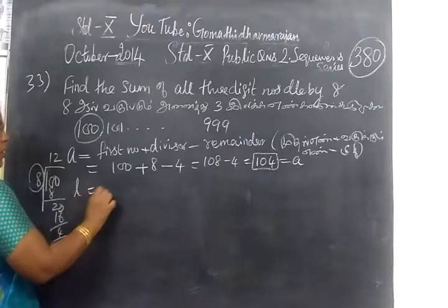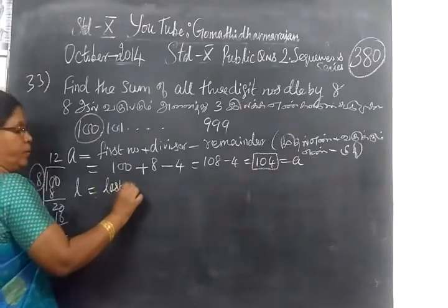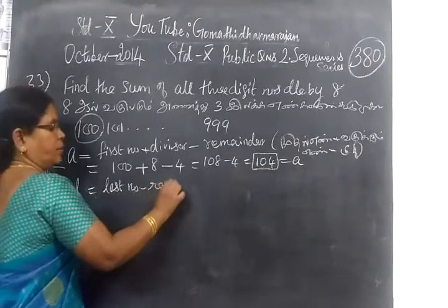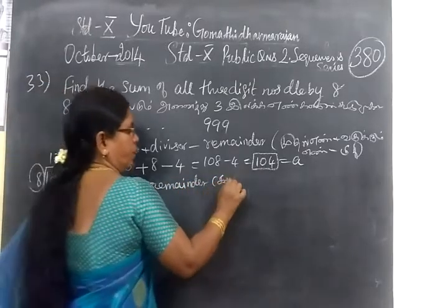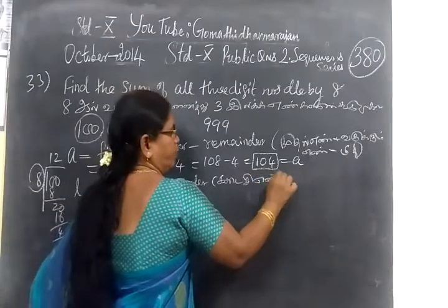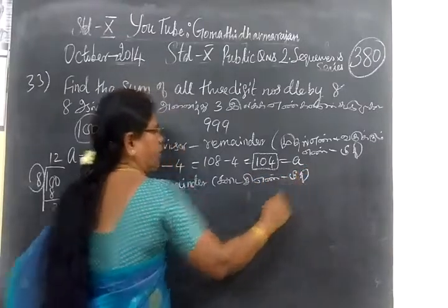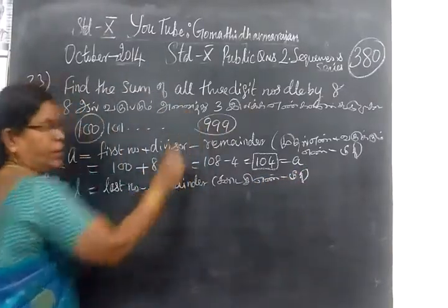Then n equal to last number minus remainder. So what is the last number? 999.